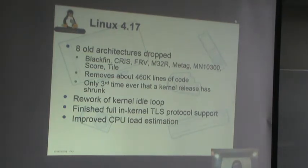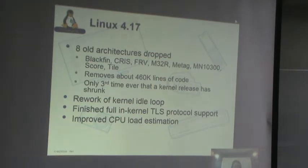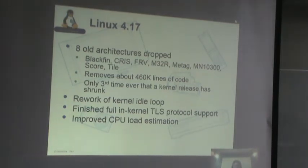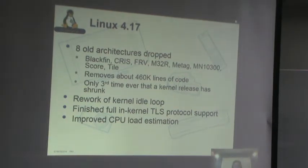The architectures being dropped include Blackfin, CRIS, FRV, M32R, Metag, MN10300, Score, and Tile. This removes about 460,000 lines of code, and it's only the third time ever that a kernel release has shrunk in size in terms of total lines of code. So we're always adding, but this release we actually went down in size.